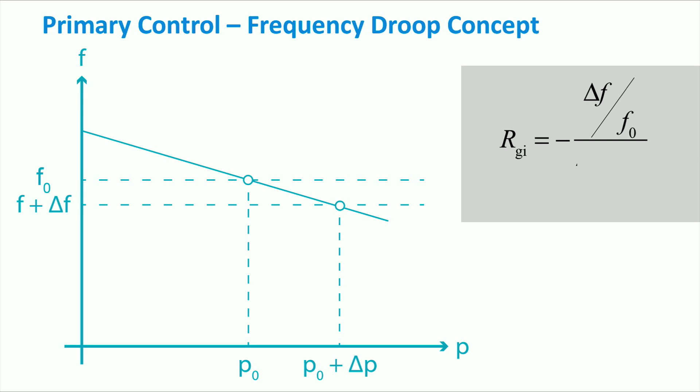The droop of a generator i is defined as the ratio of the frequency change to the corresponding change in active power output provided by the same generator. Note that the power change is given as the percentage of the initial power production, while the frequency change is given as the percentage of the nominal rated frequency. The rated frequency corresponds to the grid frequency, 50 Hz or 60 Hz, depending on the country. Here in the Netherlands, the grid frequency is 50 Hz, for example.